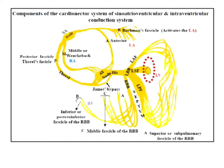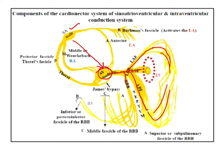As we know, the impulse travels from the SA node to the AV node. There is a slight delay in the AV node. Then the impulse travels to the left bundle branch and the right bundle branch. From the left bundle branch, the impulses travel to the left anterior fascicle, left posterior fascicle, left septal fascicles, and then to the Purkinje system. The Purkinje system has a very fast conducting system — they depolarize the left ventricle. Similarly, impulses from the right bundle branch travel to the Purkinje system and activate the right ventricle. This conduction is so rapid that we get a fast QRS complex.